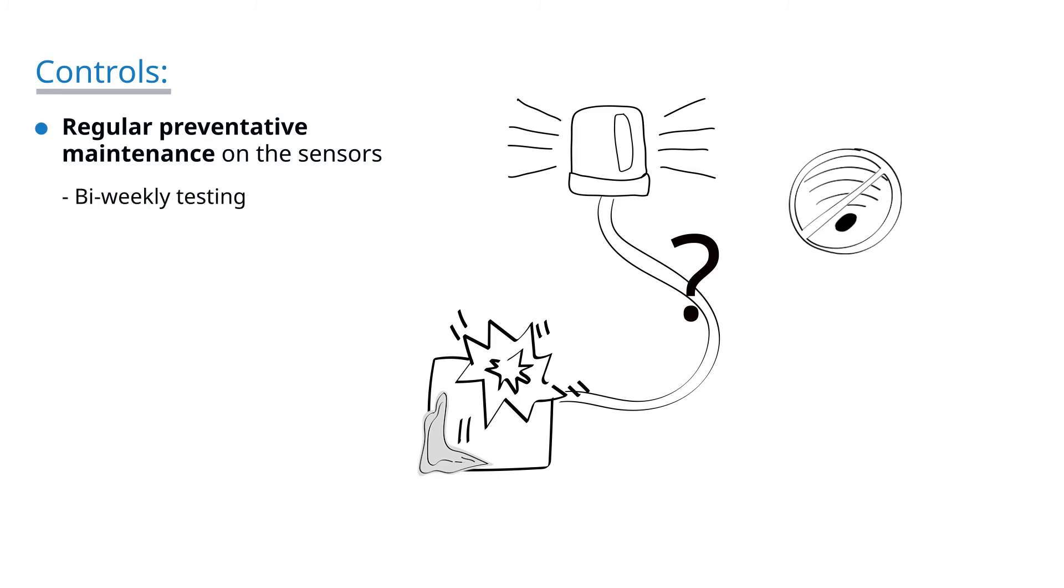We also need to make sure that our critical controls include a plan for how we track and report on these degradation factors. This plan includes all levels of the organization, from the operators to the administrative team.